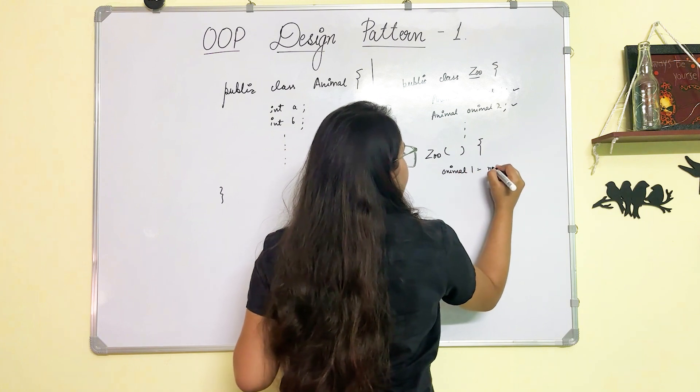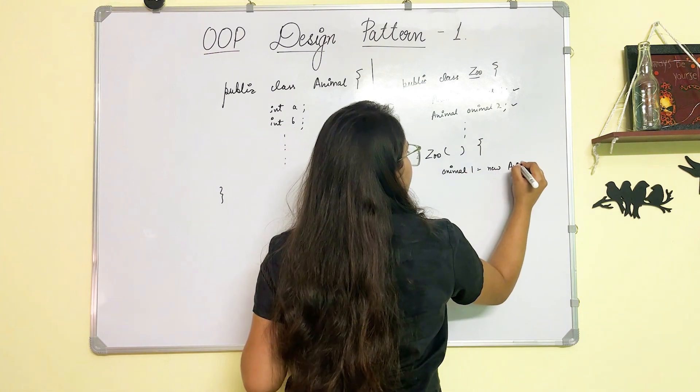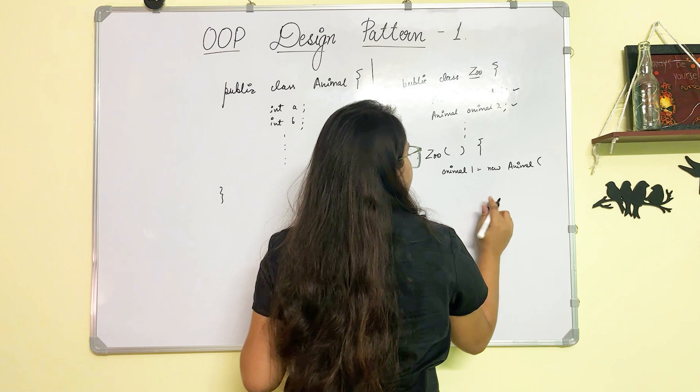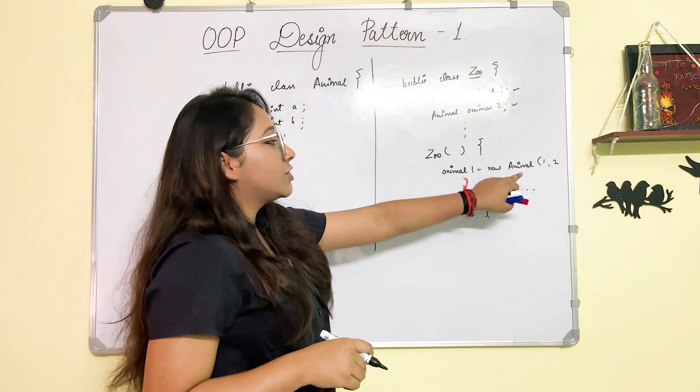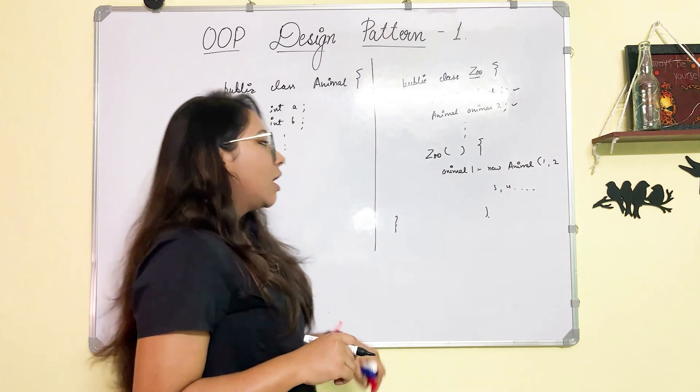new Animal with all the parameters. Let's say 1, 2, 3, 4, you are going to initialize Animal with all the values. Now, what is the problem in this design?